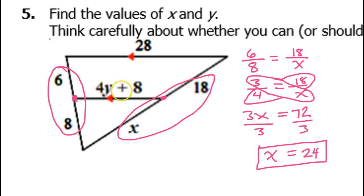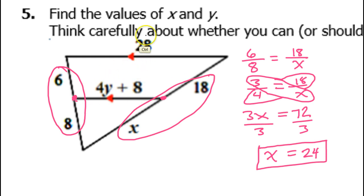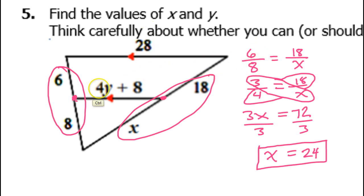Now we still need to find the value of y. We can't do something as easy as doubling the segment, because this is not a mid-segment — that only works for the mid-segment theorem. And the side-splitter theorem does not apply to the parallel sides. So I can't say 6 over 8 is equal to 28 over 4y plus 8. The side-splitter theorem is only for the sides, not the bases of the triangle.